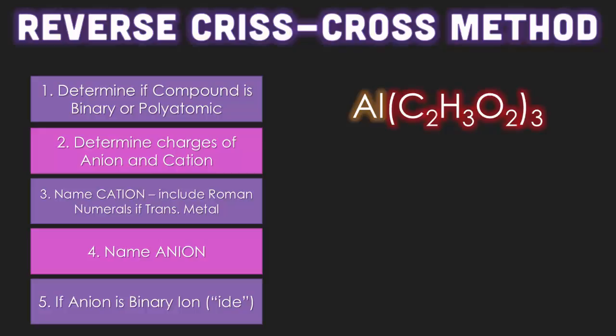Second thing we have to do is determine the charges of the anion and cation. Cations always go first. So what is that Al? Al is aluminum, so it's going to be Al with a positive three from the reference tables. And C2H3O2, since it's polyatomic, get it from table E. That's acetate. Acetate can be written two ways and the regions loves to ask you about acetate.